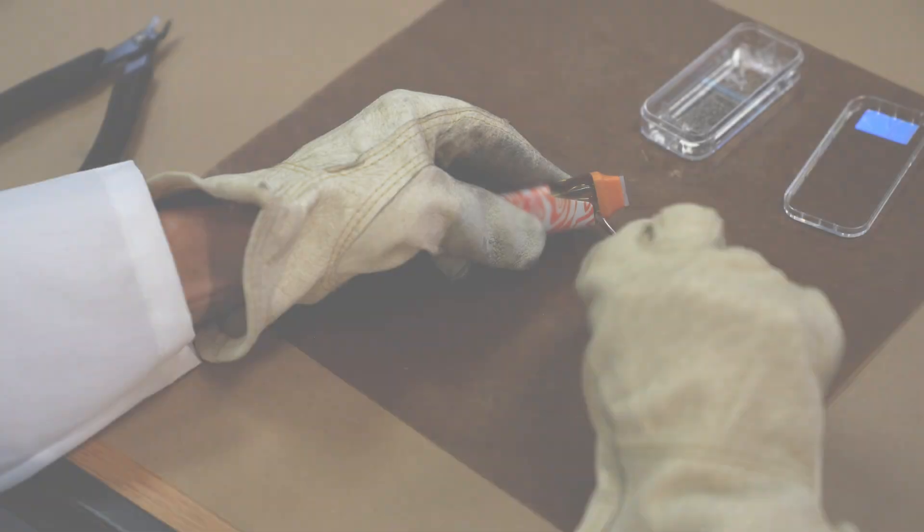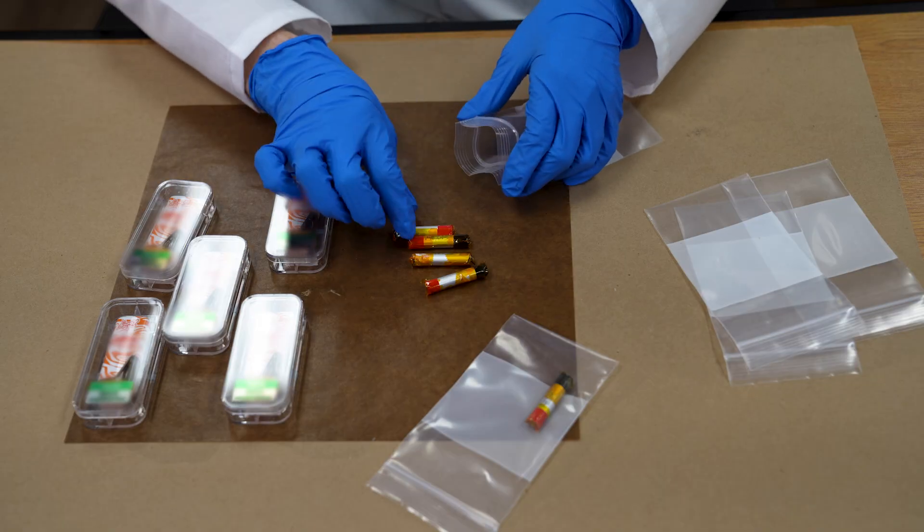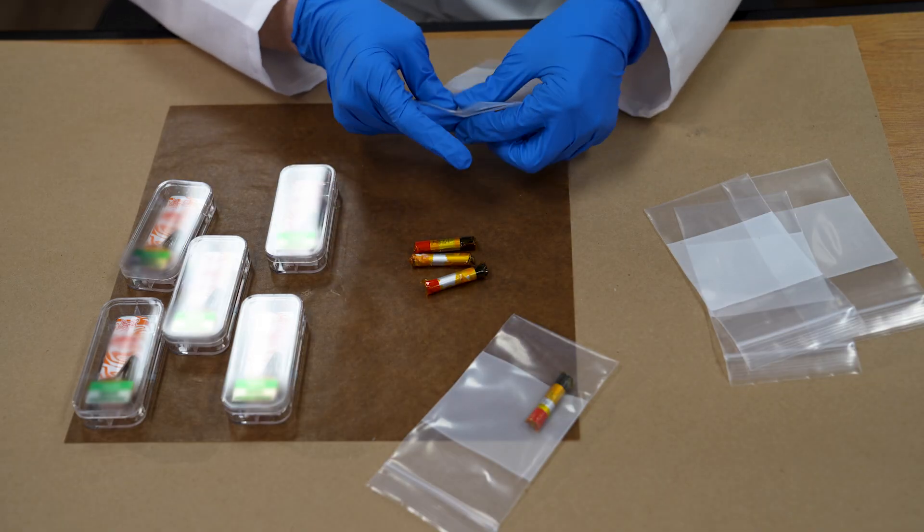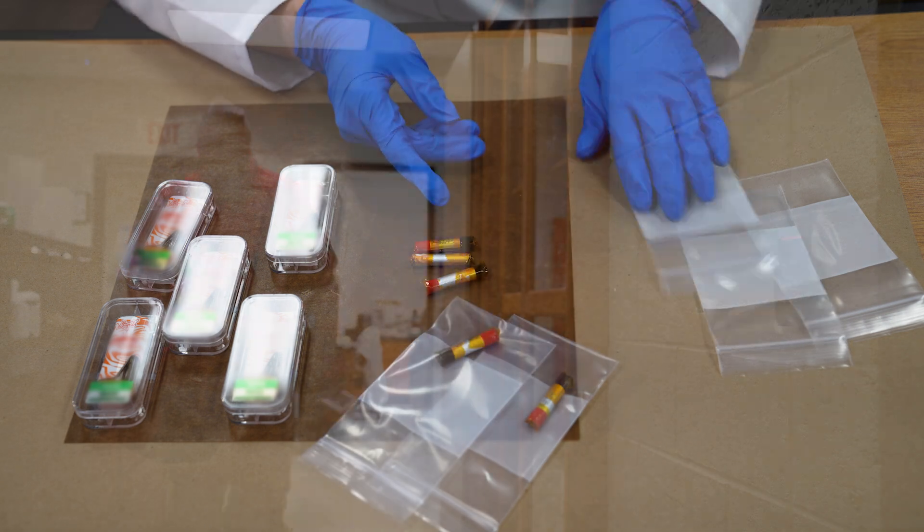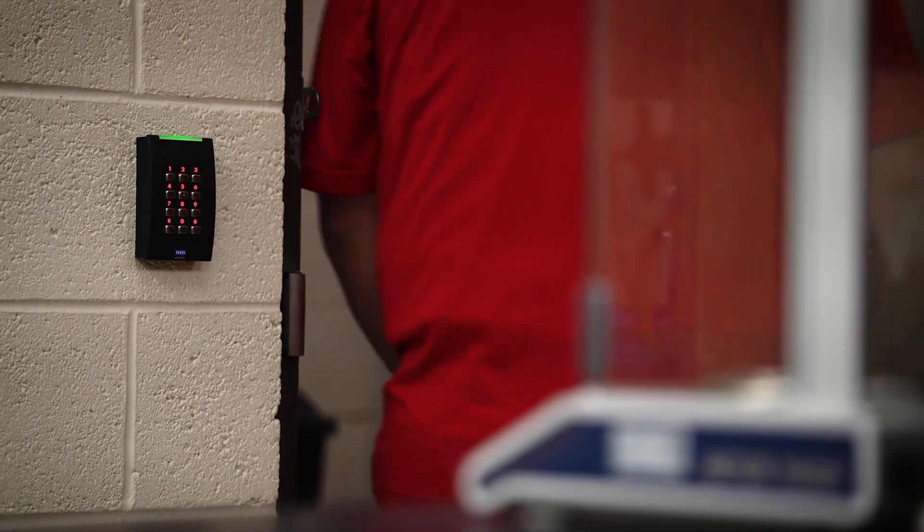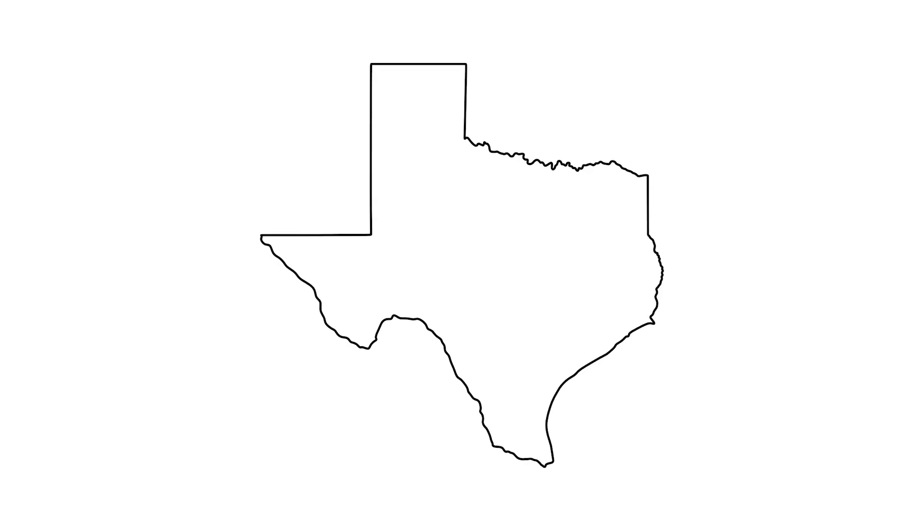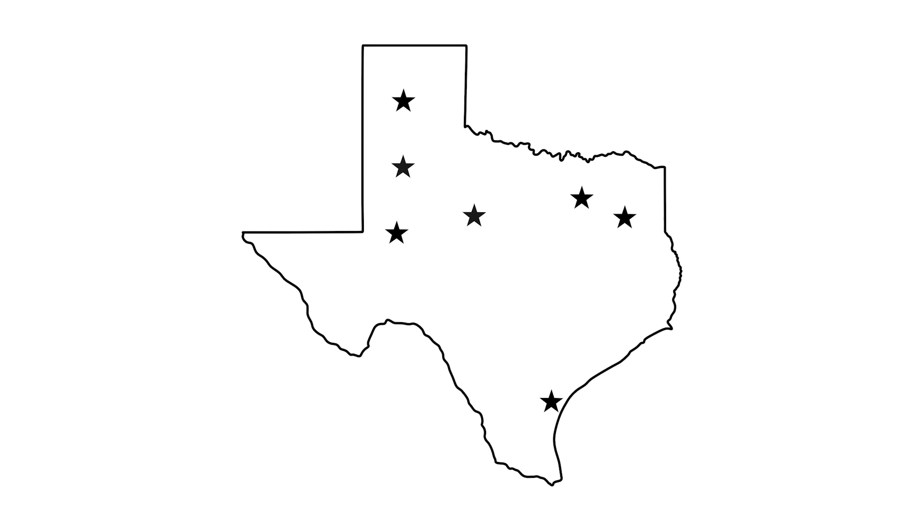Welcome to the DPS Crime Laboratory Division training video on the removal of lithium batteries from electronic smoking devices. This video will demonstrate the process for battery removal and proper packaging of the remaining device for submission to the laboratory. Failure to remove these batteries creates a substantial fire hazard to the critical evidence we store across the state. If you have any questions, please reach out to the regional laboratory.